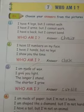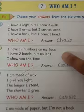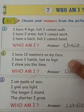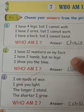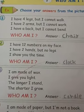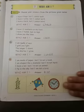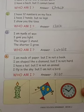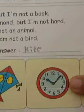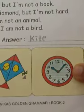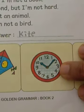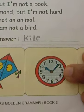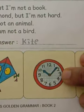Come to the second one. I have 12 numbers on my face. I have 2 hands, but no legs. I show you the time. Who am I? The answer is clock. 12 numbers are there, then 2 hands are there — one is the short hand and one is the long hand — and it shows us the time. So it is clock.